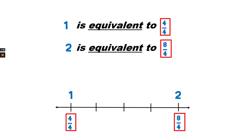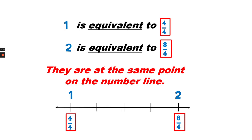One is equivalent to four fourths. That means it's equal to four fourths. Two is equivalent to eight fourths. One is at the same point as four fourths on the number line. Two is at the same point as eight fourths on the number line.